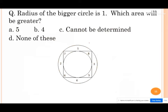The radius of the bigger circle is one. Is the diagram visible? Radius of the bigger circle is one, which area will be greater? Which area will be greater - page area number part area number char. There is one option that it cannot be determined, and there is another option that is none of these.